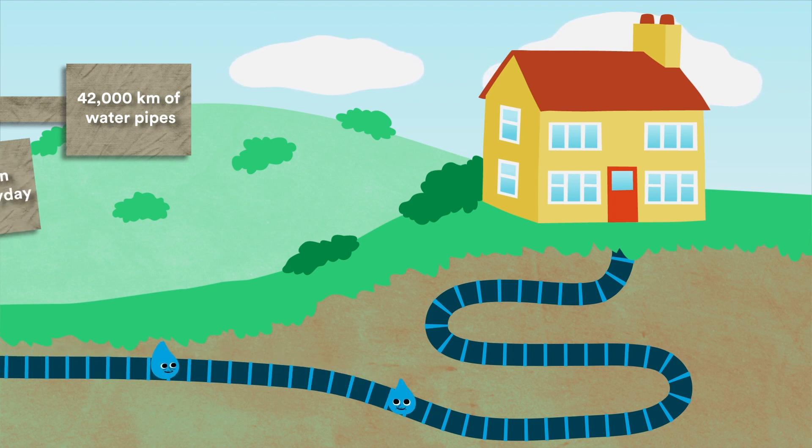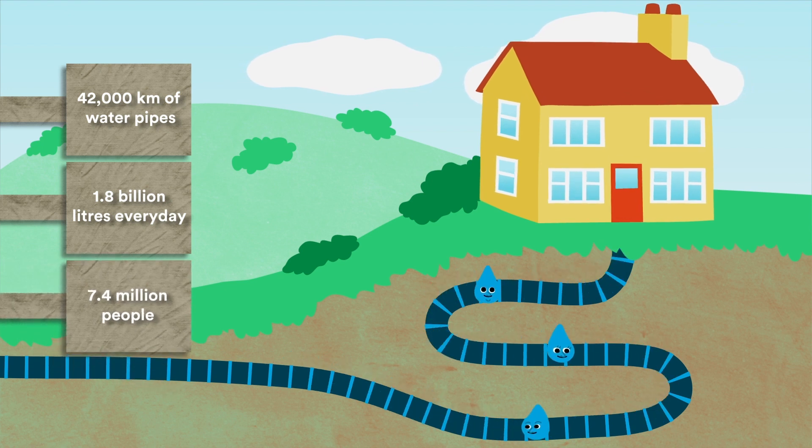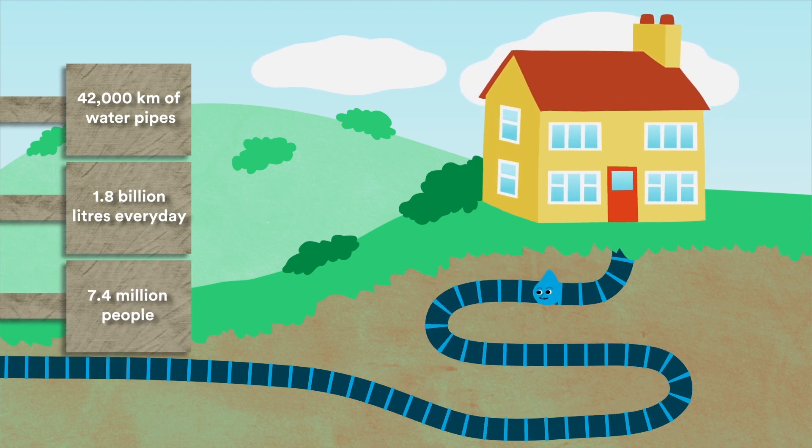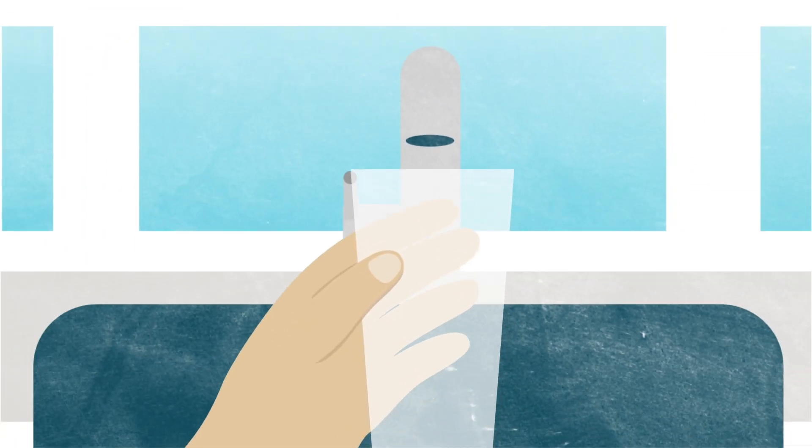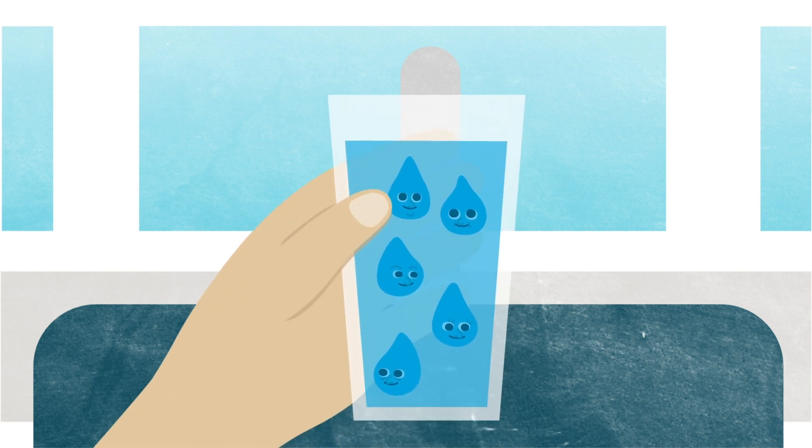We process around 1.8 billion litres of water every day for 7.4 million people and we move that water around the northwest through a maze of pipes and straight to your tap so you don't need to go to the supermarket for your water or carry it from a lake or well as in some less economically developed countries.